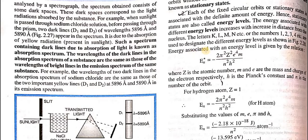The energy associated with an energy level is given by the relation: En = −2π²Z²e⁴m / n²h², where Z is the atomic number, m and e are the mass and charge of the electron respectively, h is Planck's constant, and n is the number of the orbit.